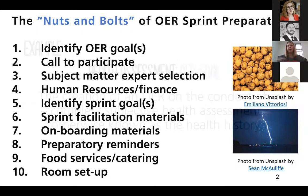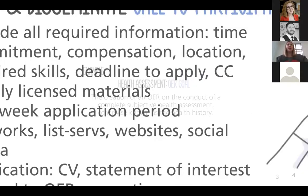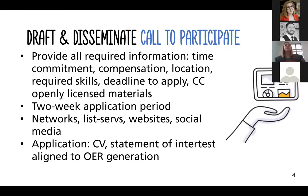First things first: before you jump into planning for a sprint, you need to identify the larger OER goal. In our case, one of the OER goals we worked on was the creation of a health assessment OER — specifically, the creation of an OER on the conduct of a complete subjective health assessment, otherwise known as health history. From there, the next step is to draft and disseminate a call to participate in the OER creation. On this document, you want to provide all required information: the time commitment, compensation if applicable, the location of the sprint, any required skill sets, a deadline to apply, and make very clear that participants will be agreeing to openly license materials.